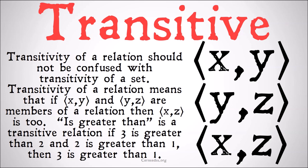'Is greater than' is a transitive relation. If 3 is greater than 2, and 2 is greater than 1, then 3 must be greater than 1. For more information and examples, check out the video on properties of relations.